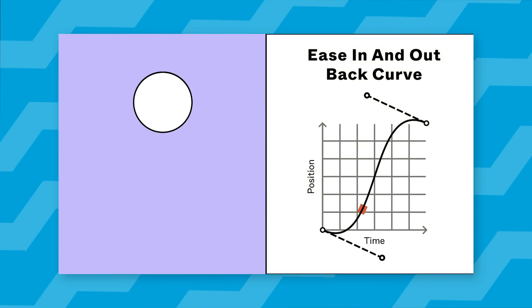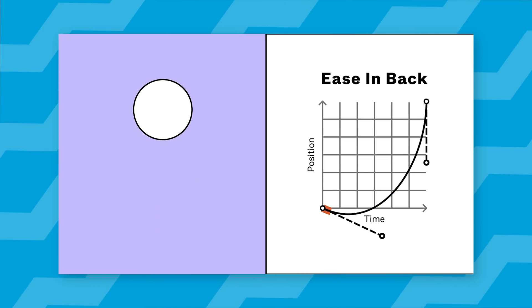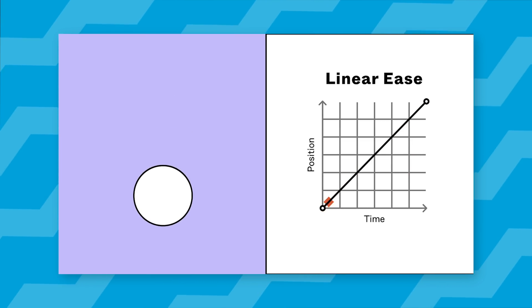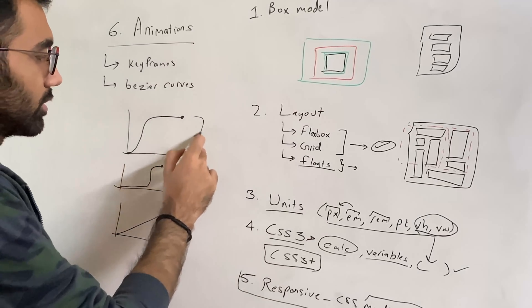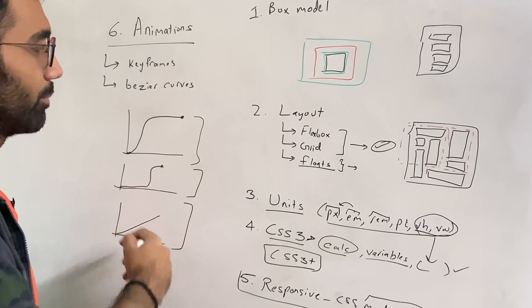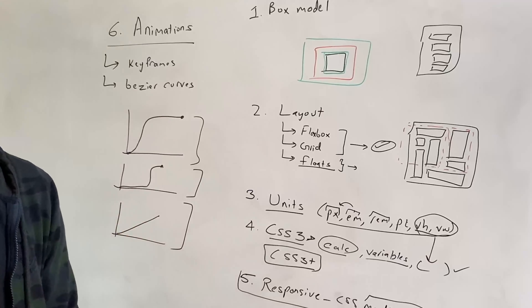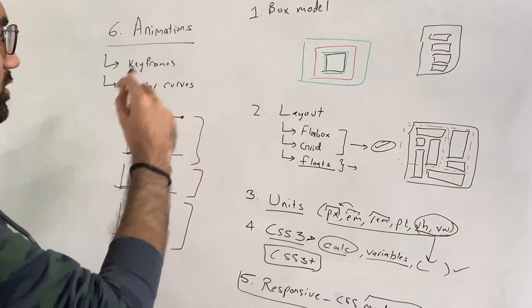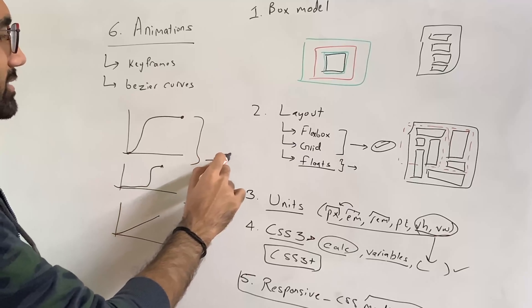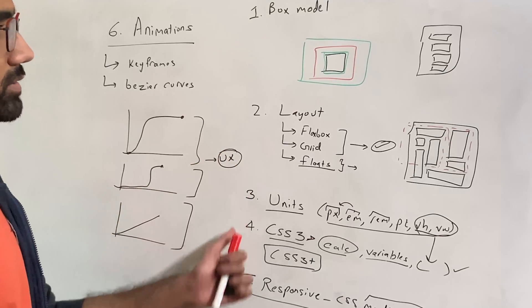So learning about all sorts of keyframes and how they work, I would also throw in something like Bezier curves. I think that's how you pronounce it. Bezier curves is like a mathematical formula of having how an animation proceeds from zero to end. So some animations you would have seen is they start fast and they end slow, right? So this is like one example of a Bezier curve. Some animations start very slow and then immediately end. Some animations which are linear, they have a Bezier curve of this.